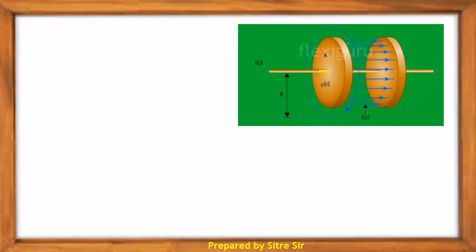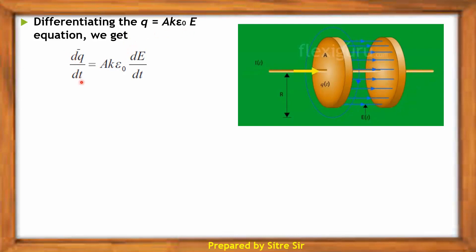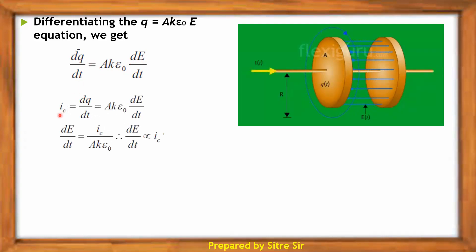Consider this diagram again. The equation is Q equal to A·K·epsilon-naught·E, where Q is the charge on the plate, A is the area of the plate, K is the dielectric constant, epsilon-naught is the permittivity of vacuum, and E is the electric field. Differentiating both sides: dQ/dt on the left and A·K·epsilon-naught·(dE/dt) on the right, since A, K, epsilon-naught are constants. Hence dQ/dt equals IC, the conduction current, and rearranging gives dE/dt equal to IC upon A·K·epsilon-naught, so dE/dt is proportional to IC.